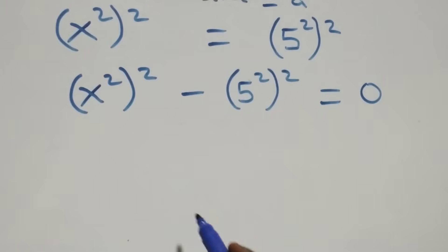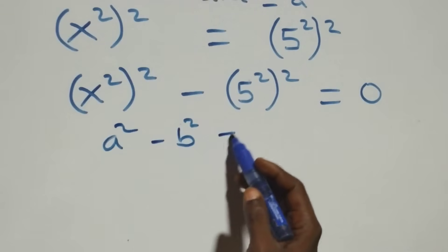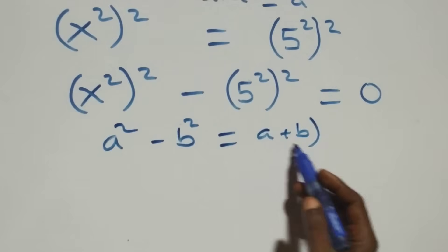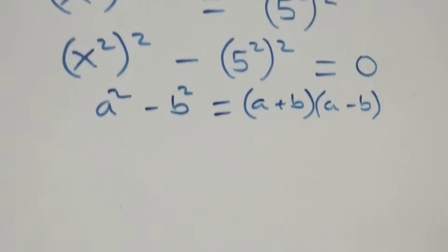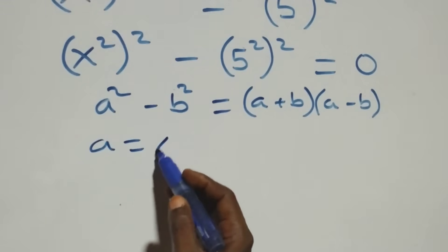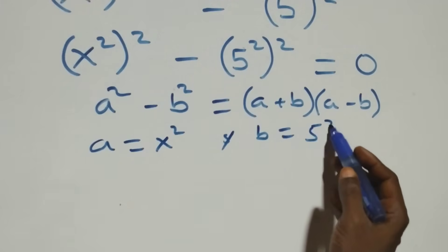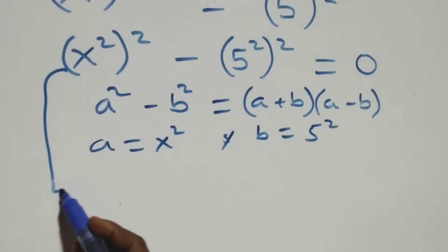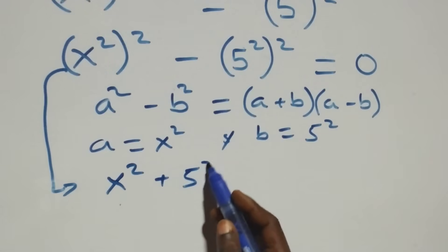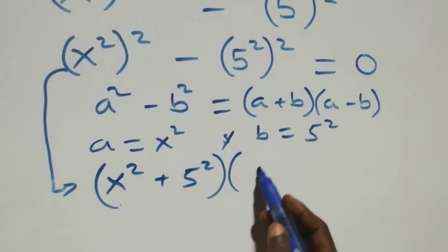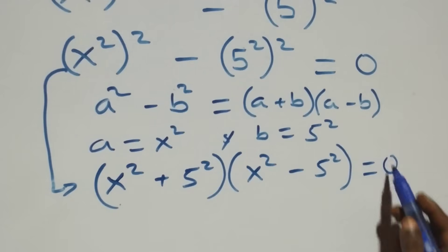The next step follows on the difference of two squares: a squared minus b squared is the same thing as (a + b)(a - b). From here, a is standing as x squared and b is standing as five squared. So this becomes (x squared + five squared)(x squared - five squared) equals zero.